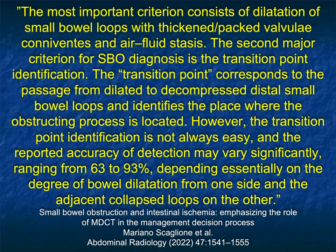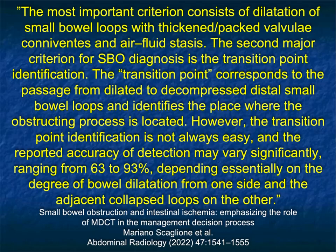The most important criteria in looking at small bowel obstruction is looking for dilatation of the small bowel loops. We look for thickened bowel loops, air fluid levels, and transition points. One of the most common advantages of coronal over axial imaging is that it's much easier to follow a transition. With axial images, you're going up and down, but with a coronal view, you can really follow the loops for a distance and look for those transitions.